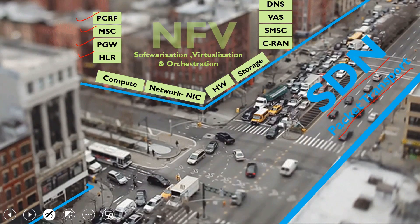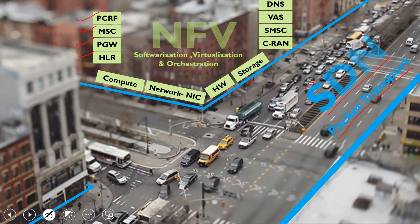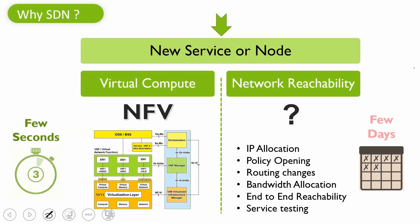Let's understand why we need SDN. NFV helps in virtualizing the network, enabling rapid deployment and reducing the time to deploy new services or nodes — NFV can do this in seconds. But what about network reachability? For any new node or service, we need IP allocation, bandwidth allocation, policy opening, and routing changes.